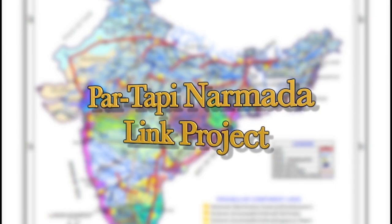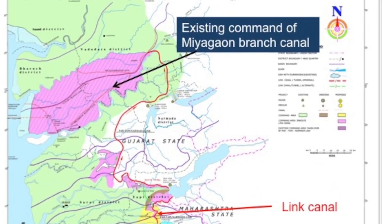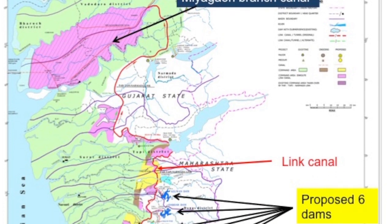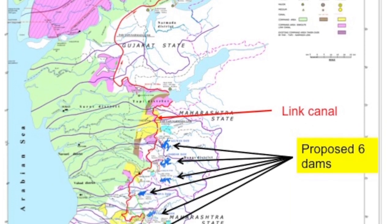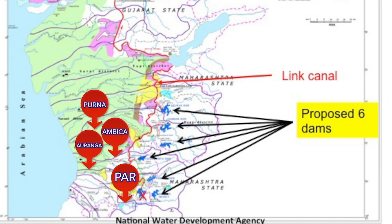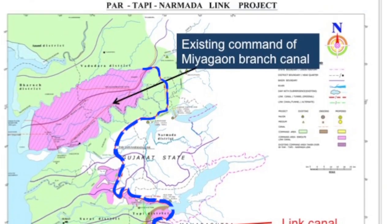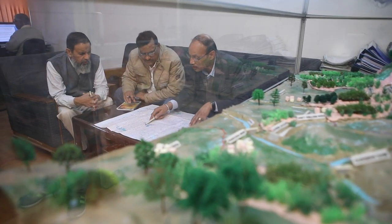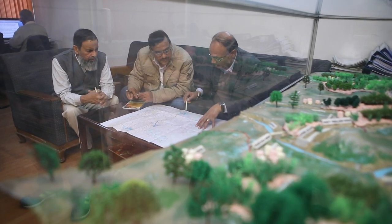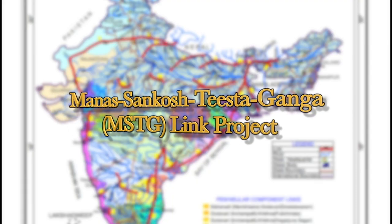The Par-Tapi-Narmada link project envisages transfer of 1,330 million cubic meters of surplus water from the Par, Auranga, Ambika, and Purna rivers to drought-prone areas of north and south Gujarat. However, the DPR of the link is being modified as per the suggestion of the Government of Gujarat.